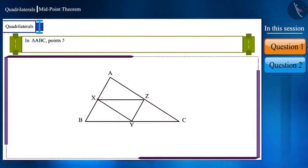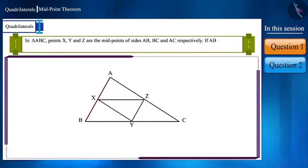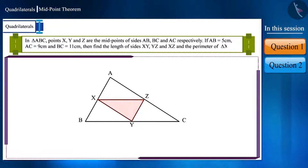In triangle ABC, points X, Y and Z are the midpoints of sides AB, BC and AC respectively. If AB is equal to 5 cm, AC is equal to 9 cm and BC is equal to 11 cm, then find the length of sides XY, YZ and XZ and the perimeter of triangle XYZ.